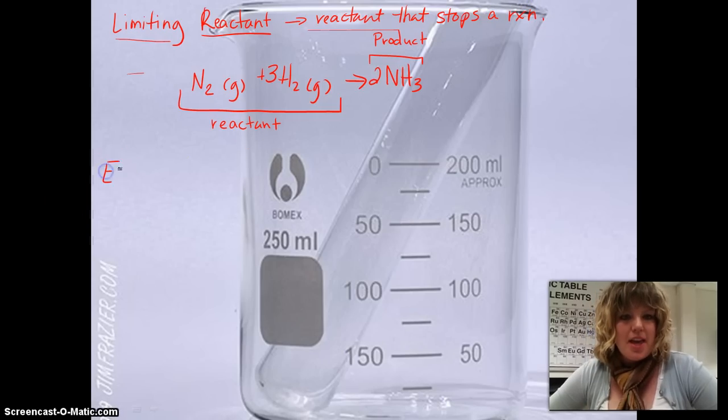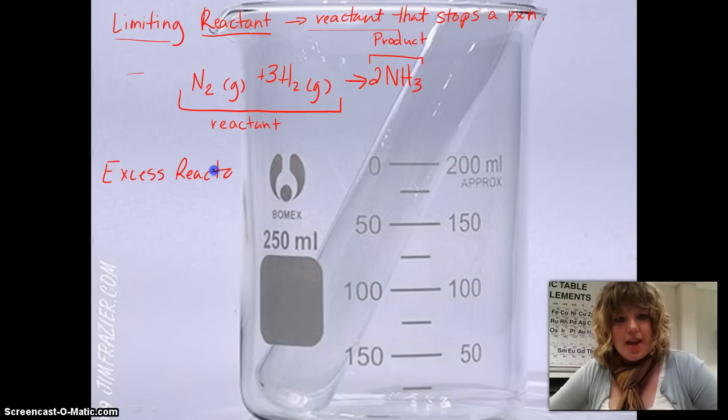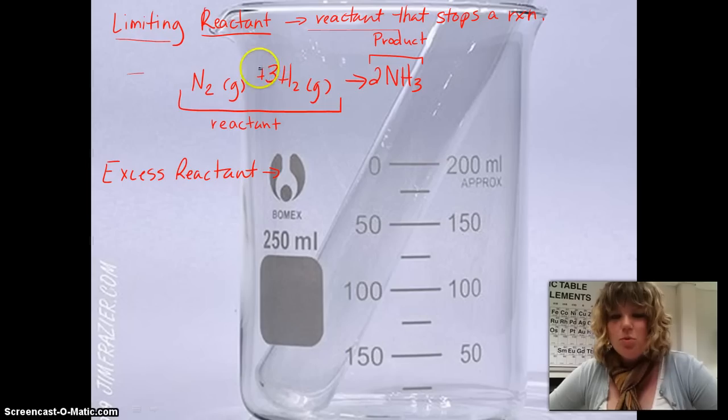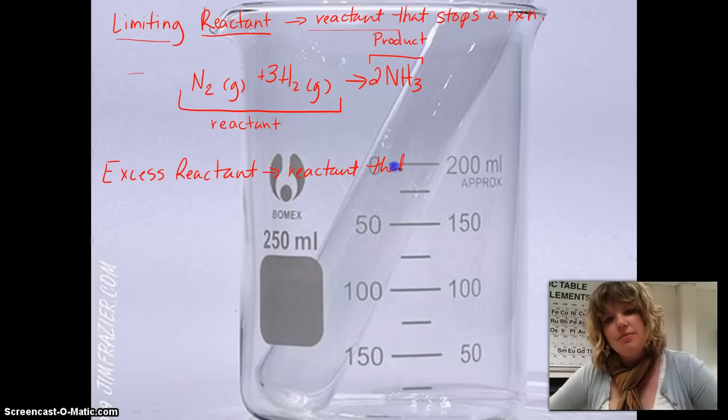On the other side of that, we have the excess reactant. And the excess reactant is exactly what it sounds like. Whatever one is limiting it, whatever one runs out of atoms, and the other one that still has atoms will be considered our excess. So it's going to be the reactant that has mass left over.